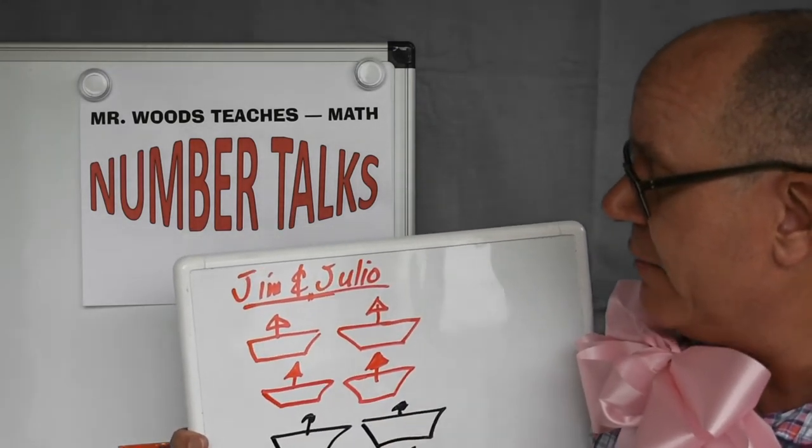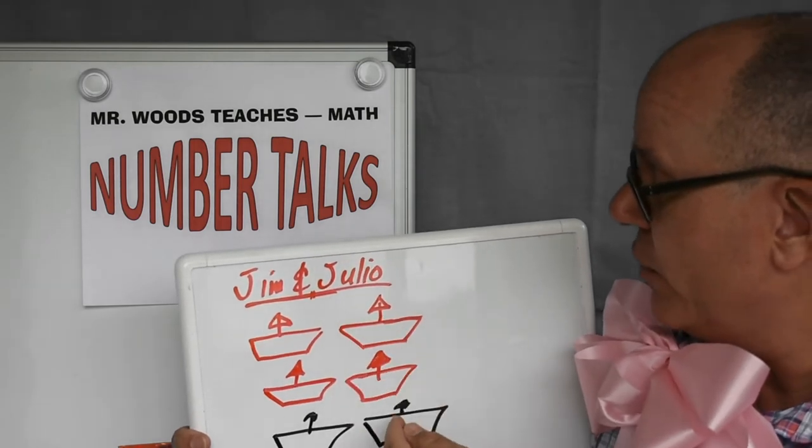We have one, two, three, four, five here, and one, two, three, four, five there.